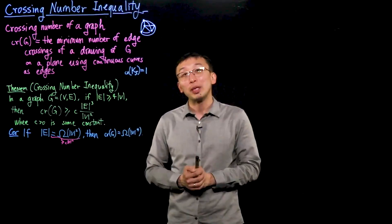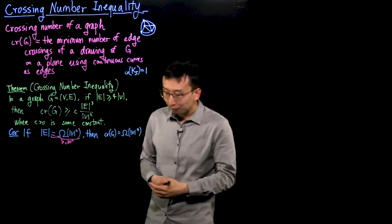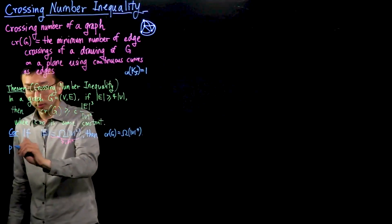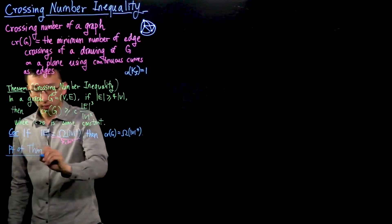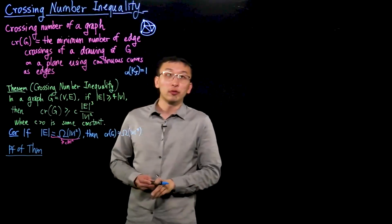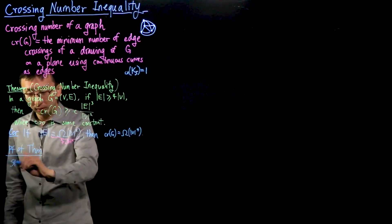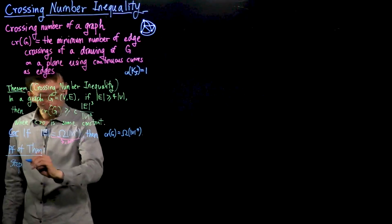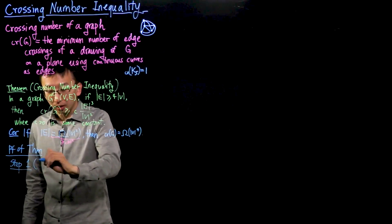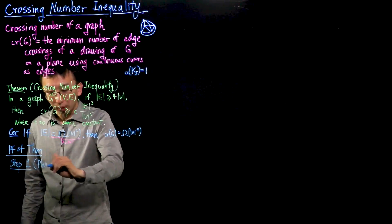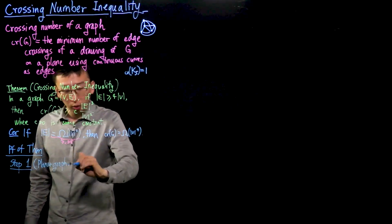In the rest of the video, let me demonstrate the proof of the crossing number inequality. I'll split the proof into three steps. The first step is an analysis of planar graphs, namely graphs with no crossings.